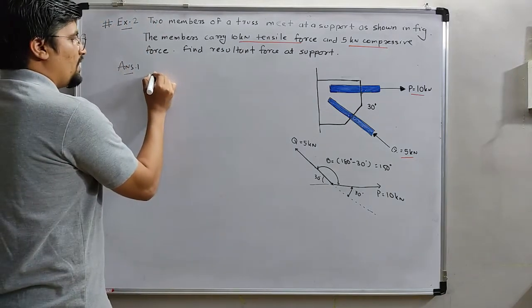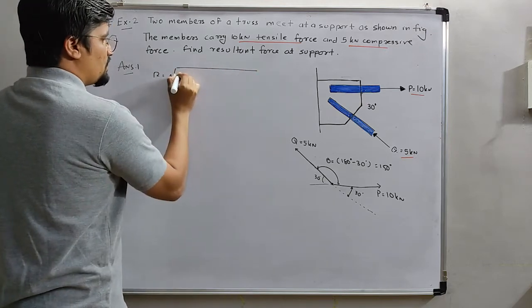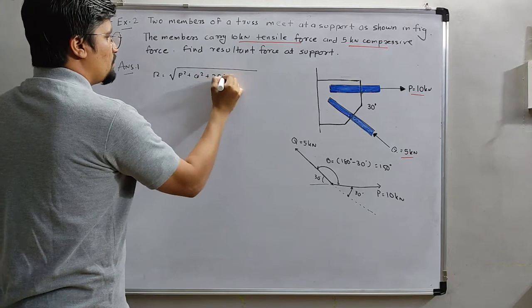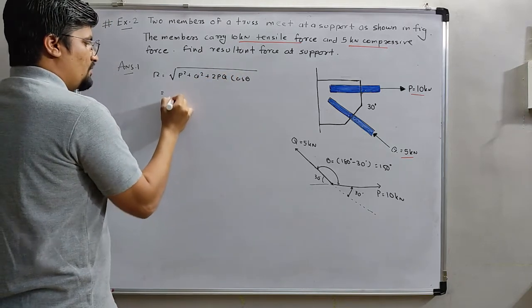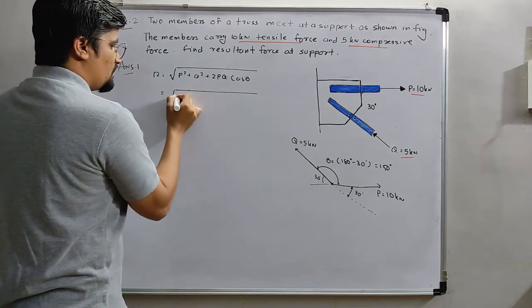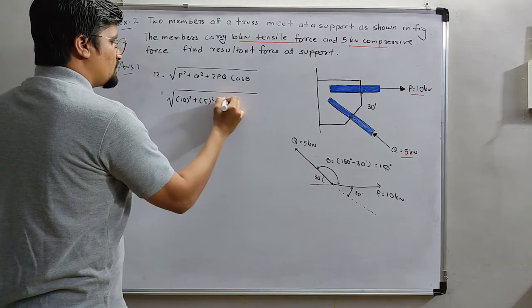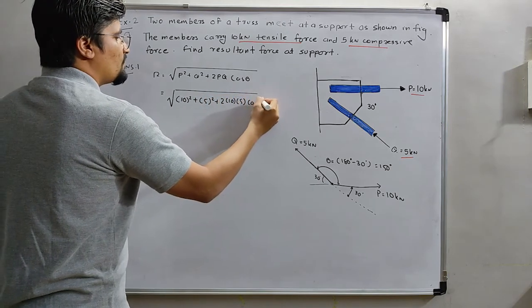Now, using the formula R is equal to under root of P square plus Q square plus 2PQ cos theta. The value will be like this: P square means 10 square plus 5 square plus 2 into 10 into 5 cos 150.